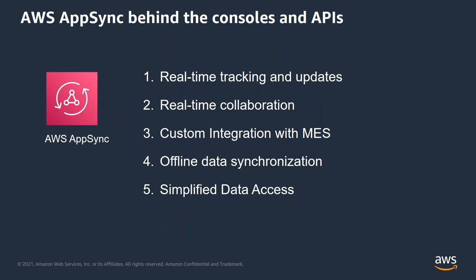AWS AppSync plays a key role behind these consoles. It is a fully managed service that makes it easy to develop GraphQL APIs and supports real-time updates and collaboration across the factory floor. With AppSync, you get a rich set of APIs to create sites, issues, and monitors. These APIs allow for custom integration with external systems such as manufacturing execution systems for automated issue creation and solving. It also has capabilities for offline data sync where internet connectivity is poor on the factory floor. And it handles the heavy lifting of securely connecting to data sources like Amazon DynamoDB, with caches to improve performance.